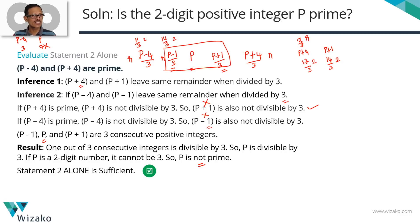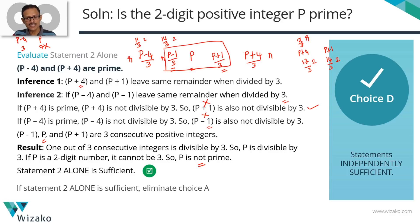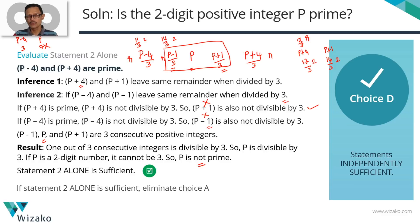So using statement 2 alone, we've concluded that p is not prime. Statement 1 alone gave us a conclusive answer, and statement 2 alone also gave us a conclusive answer. Both statements independently answer the question, so choice D is the correct answer. The key rationale: going from p − 4 to p − 1, and p + 4 to p + 1, then using three consecutive positive integers to establish divisibility by 3.